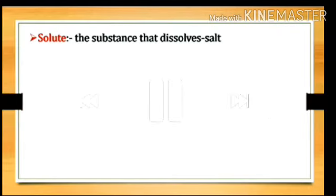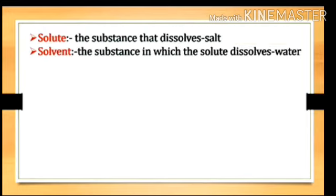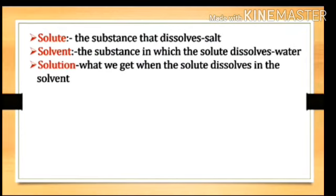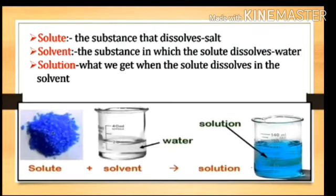Now see the next part. Solute: the substance that dissolves is called the solute. In this experiment, salt dissolves in water, so salt is the solute. Solvent: the substance in which the solute dissolves is called the solvent — that is water here. Solution: when the solute dissolves in the solvent, we get a solution. For example, copper sulfate dissolved in water gives a solution.